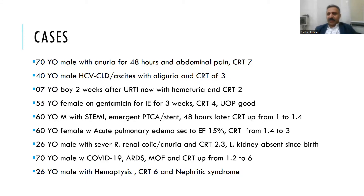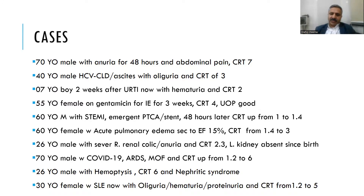A 26-year-old male with hemoptysis, creatinine of 6, and nephritic syndrome — most likely RPGN secondary to Goodpasture syndrome, causing hemoptysis and rising creatinine with nephritic syndrome. A 30-year-old female with SLE, nondescript hematuria, proteinuria, and rising creatinine — most likely diffuse proliferative or Class 4 lupus nephritis, or RPGN with crescentic GN secondary to lupus nephritis.